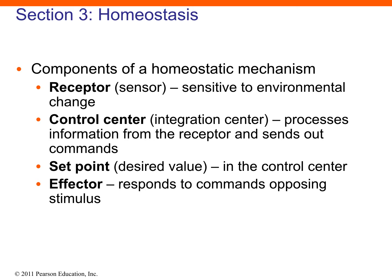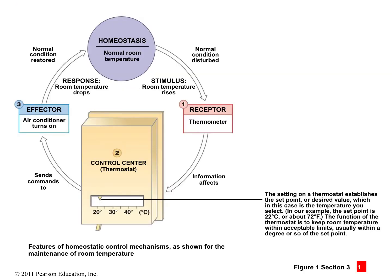Feedback systems include both positive and negative types. In each, there are three components: a receptor, a control center, and an effector. For thermoregulation as an example, the receptor would be nerve endings in our skin sensing the temperature. Let's say the temperature drops dramatically to 30 or 40 degrees Fahrenheit — those receptors send a signal all the way up to the brain, which is the control center.